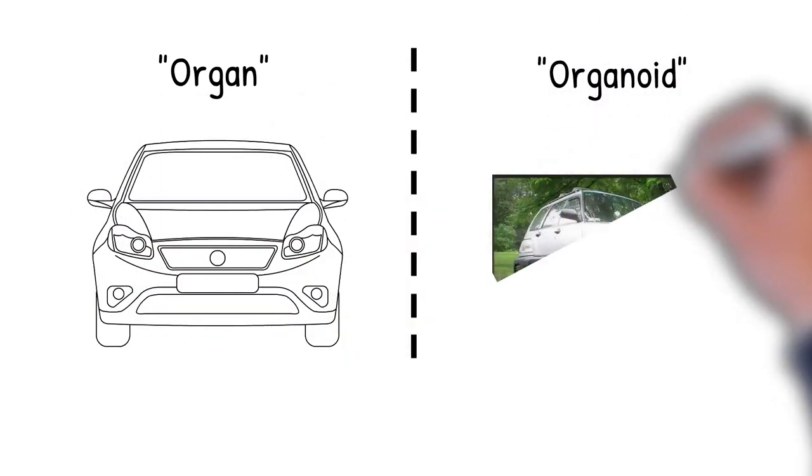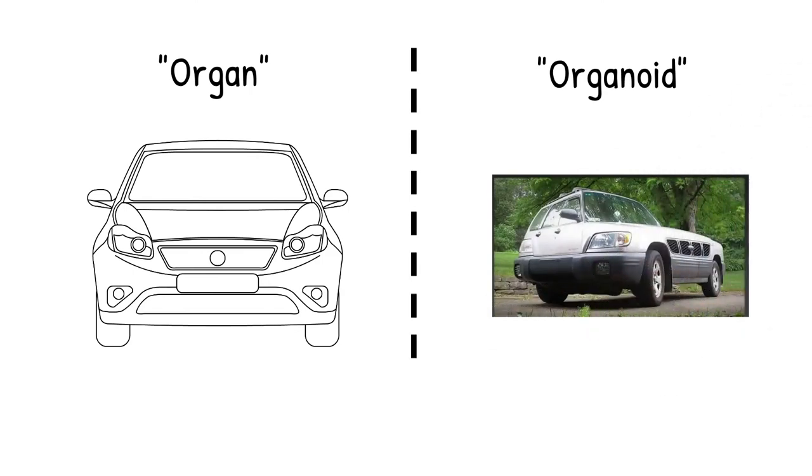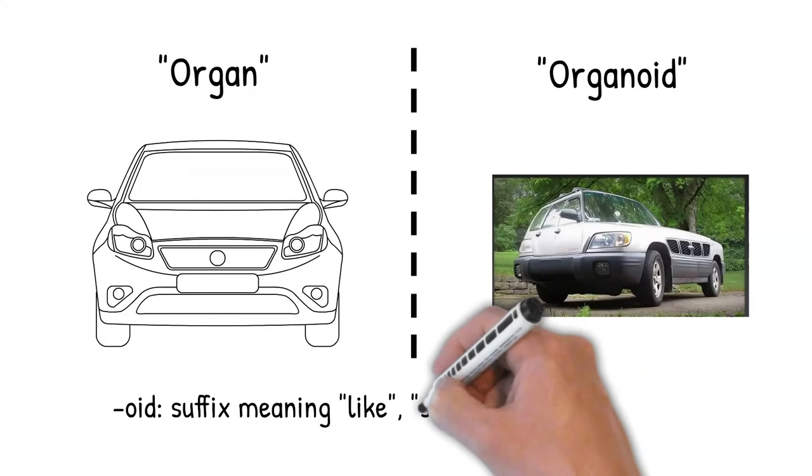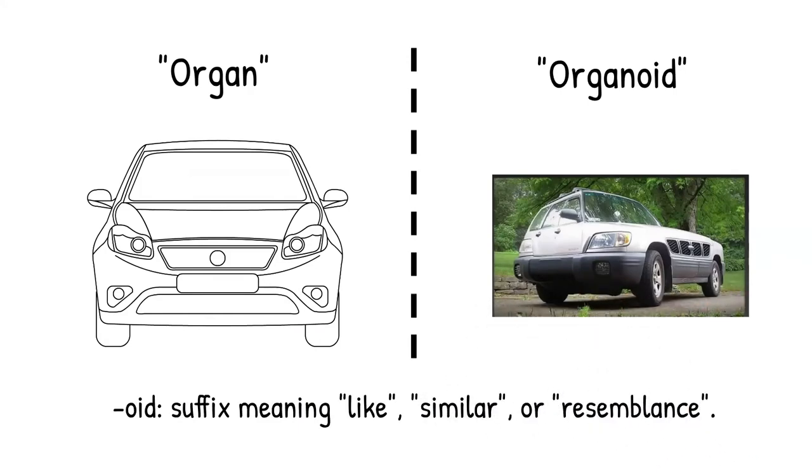The parts are misarranged. The tailpipe is sticking out of the roof, the steering wheel is in the trunk, the windows are on the floor. You can still turn on the radio, but you can only get a few radio stations. Hence the name organoid. They are only organ-like.